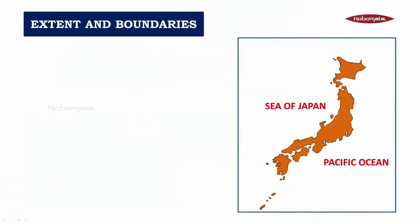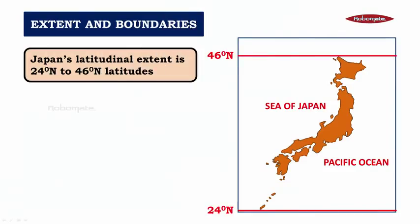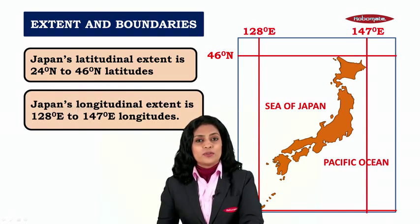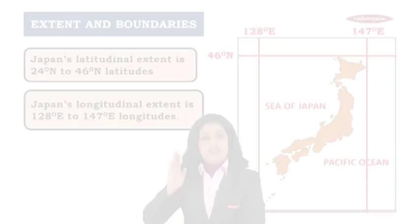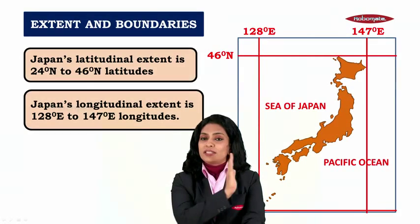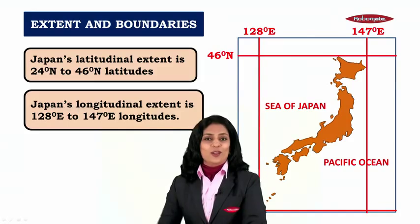Let us understand Japan better through its latitudinal and longitudinal extent. Japan's latitudinal extent is 24 degrees north to 46 degrees north latitudes. Japan's longitudinal extent is 128 degrees east to 147 degrees east longitudes.